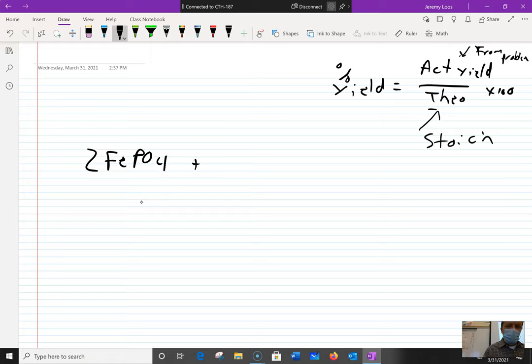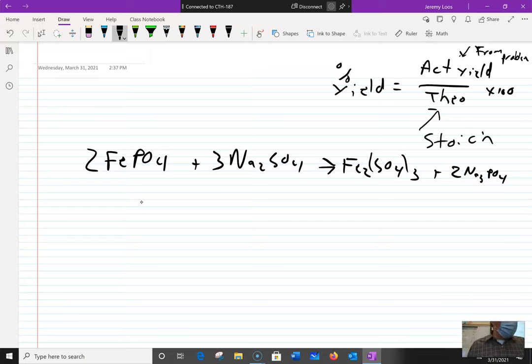So it's 2FePO4, this is the top of page 180, 3Na2SO4, and then Fe2(SO4)3 plus 2Na3PO4. Okay. So it says, if I perform this reaction with 25 grams of iron 3 phosphate and excess of sodium sulfate. Okay. So first of all, notice that's describing the reactants.